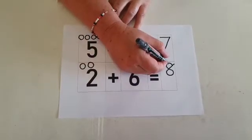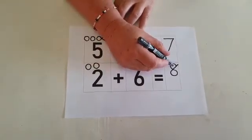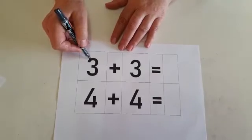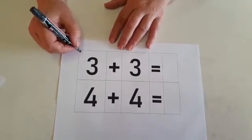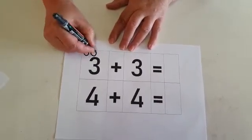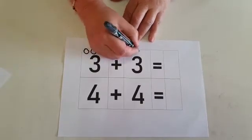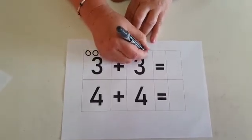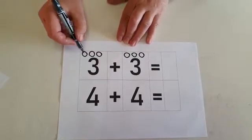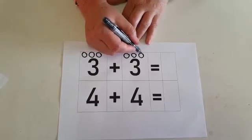What's this number? 3. How many circles will we make? We will make 3. 1, 2, 3. Plus 3. 1, 2, 3. Now let's see. 3 plus 3 equals... Let's add it up. 1, 2, 3, 4, 5, 6. 3 plus 3 equals 6. 3 plus 3 equals 6.